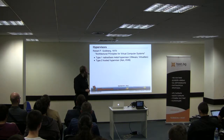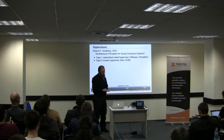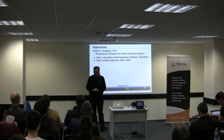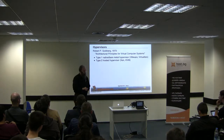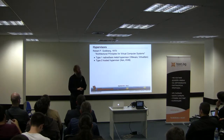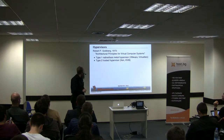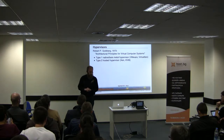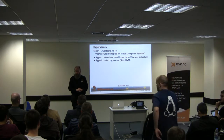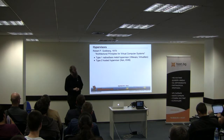After we moved from mainframes to PCs, we kind of forgot about virtualization, until PCs became so powerful that we now want to do multiple things on one PC again. Robert Goldberg wrote a work about virtual computer systems and defined two categories of hypervisors. Type one hypervisors emulate the hardware of a computer — popular ones are VMware and VirtualBox — and for the guest operating system, it really looks like it's talking to a real computer by itself.